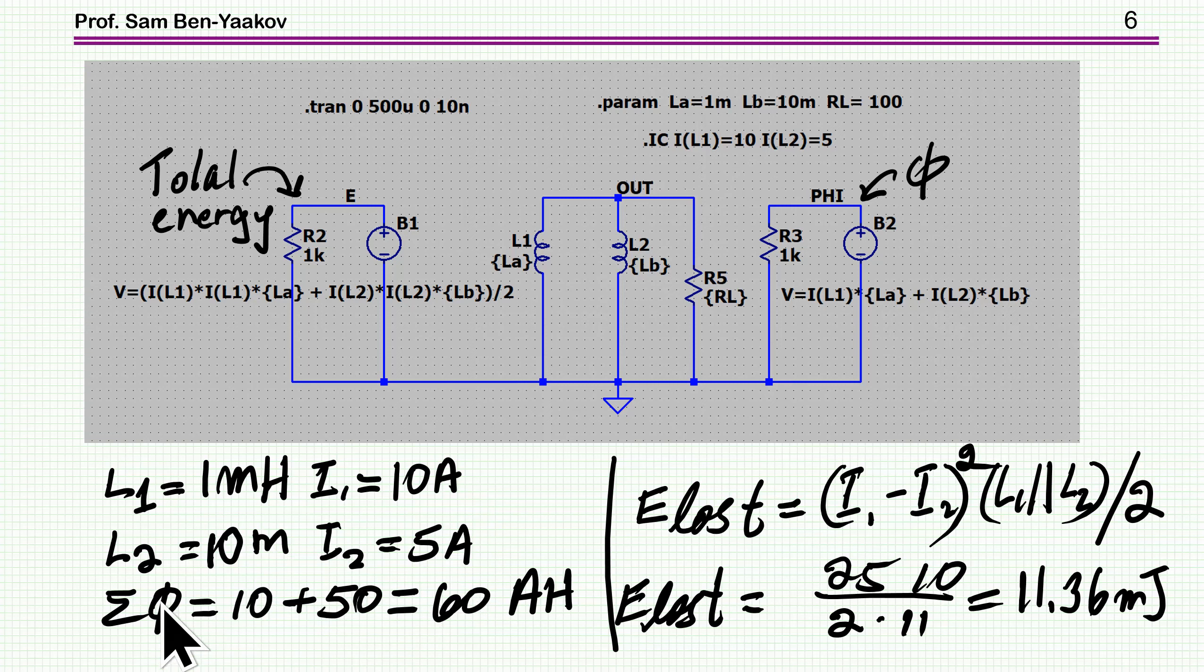According to what I've shown with the superposition and this intuitive explanation, the energy loss should be I1 minus I2 squared, and the two inductors in parallel, divided by 2. This is the energy, and it comes up to be 11.36 mJ. This is 25, the difference is 5, so it's 25, and then the inductances in parallel is 10 over 11, and then divided by 2. So this is what I would expect.